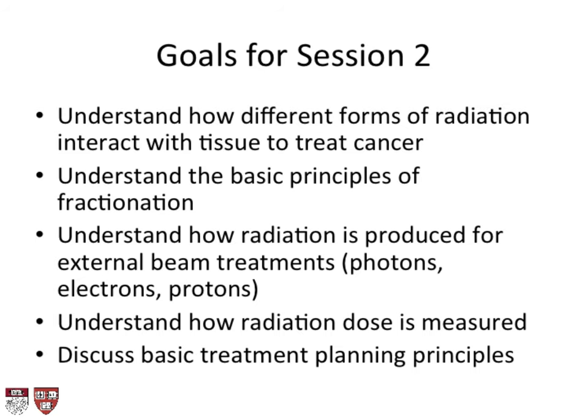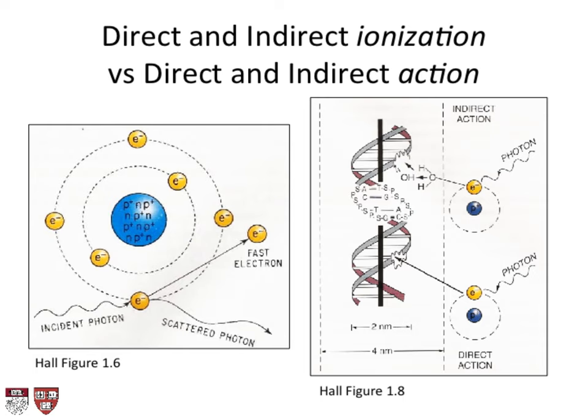Let's start with how does radiation interact with tissue to treat cancer. The first thing to think about is whether a type of radiation is directly or indirectly ionizing, and then whether it has direct or indirect action. Photons have no charge, so they can't directly ionize — they have to hit an electron, which will then go floating around ionizing molecules, which will then damage DNA. Direct action is the photon hits an electron which then directly damages DNA. Indirect action is the photon hits an electron that ionizes water, producing a hydroxyl radical, which then floats around, hits the DNA, and damages the DNA strand.